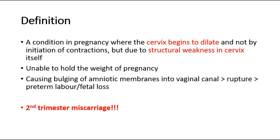This results in an inability to hold the weight of the pregnancy, causing bulging of the amniotic membranes into the vaginal canal, later causing rupture of membranes, and then preterm labor, or even fetal loss. It usually occurs in the second trimester and sometimes may cause a second trimester miscarriage.